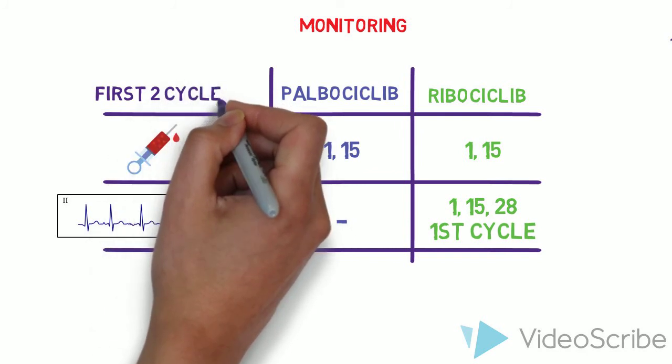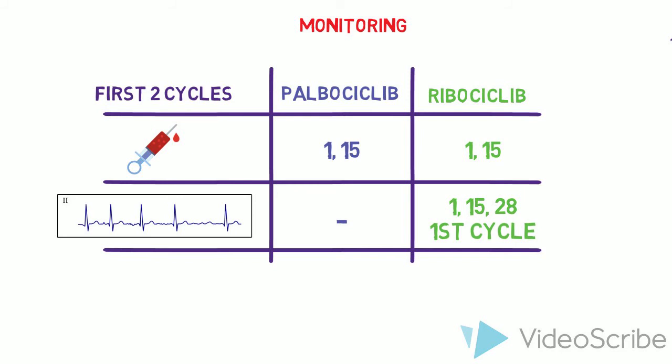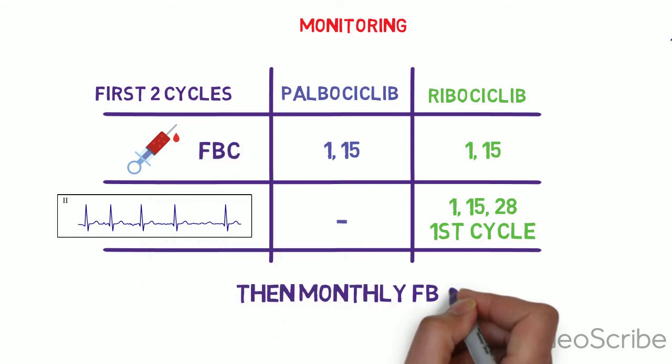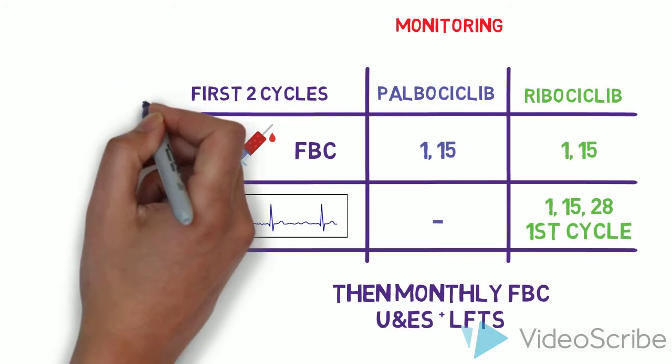After the first two months full blood count monitoring can reduce to monthly and after six months a further reduction in monitoring may be acceptable for some patients.